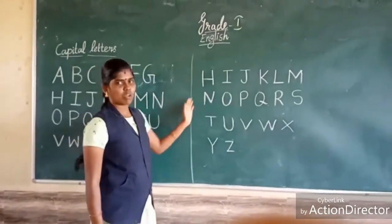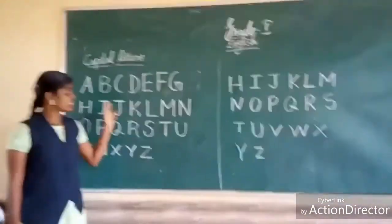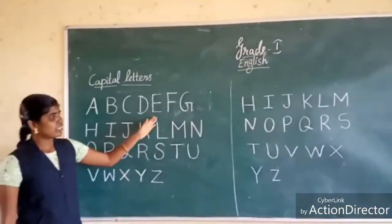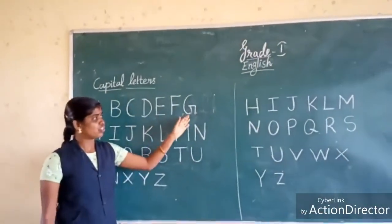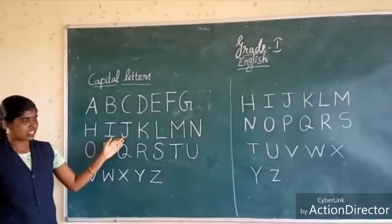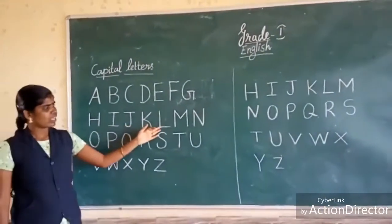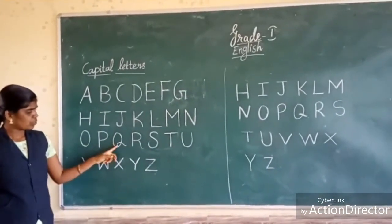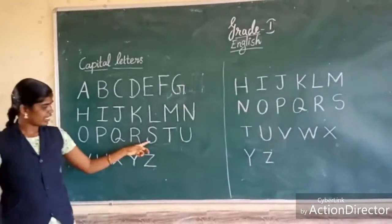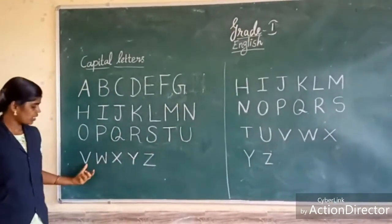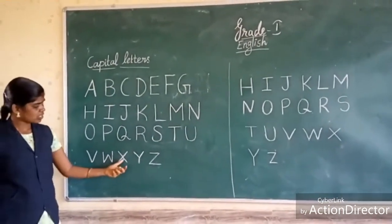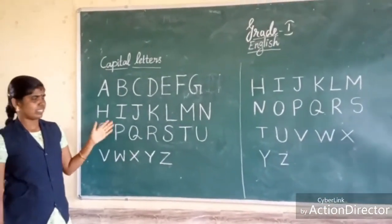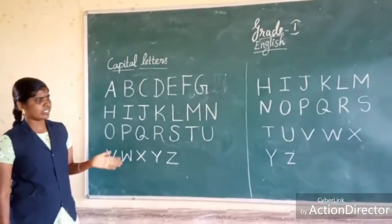We have now completed all the capital letters. Once again: A, B, C, D, E, F, G, H, I, J, K, L, M, N, O, P, Q, R, S, T, U, V, W, X, Y, Z. How many letters are in the alphabet? 26 letters. Thank you, students.